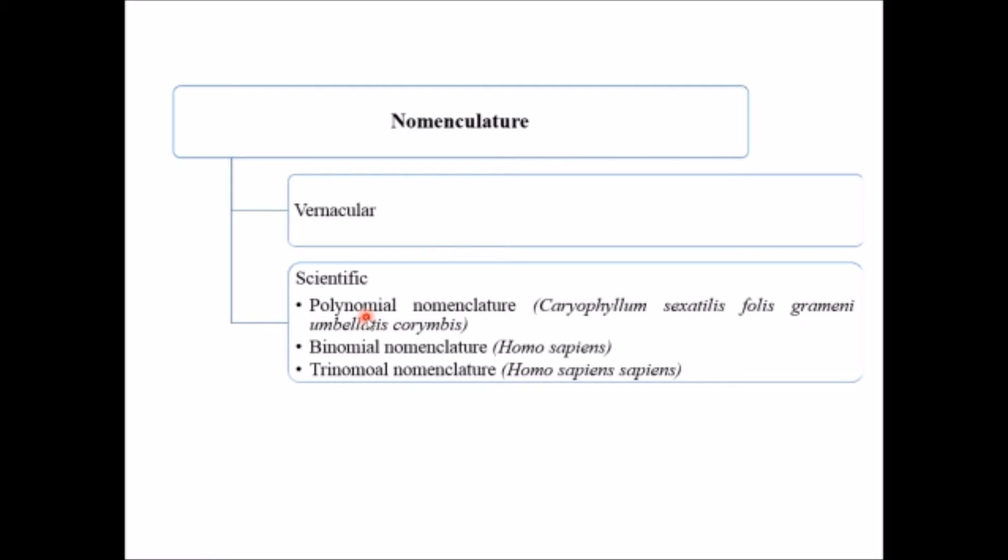There were three types: one is the polynomial nomenclature, another is the binomial nomenclature, and the other is the trinomial nomenclature. The most accepted is the binomial nomenclature.